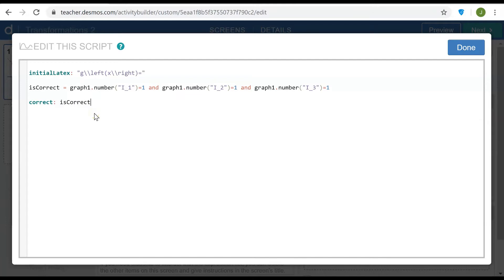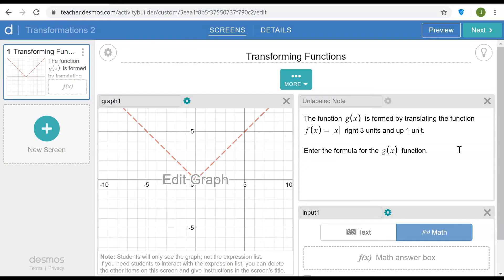So that maybe seems like an insignificant change but what that will do is allow me to access whether the isCorrect boolean variable is true or not from elsewhere in the activity. So I'd like to show two ways in which we could provide the student with feedback.